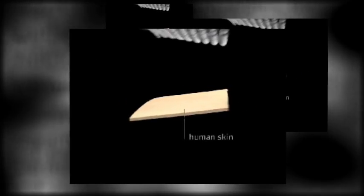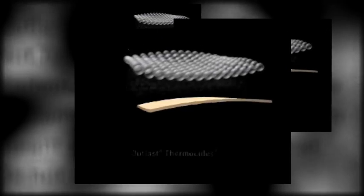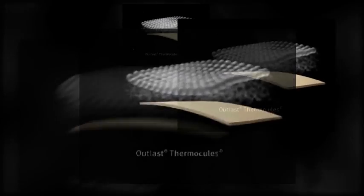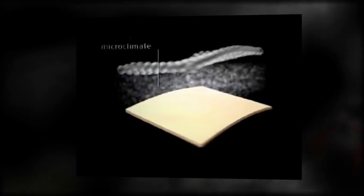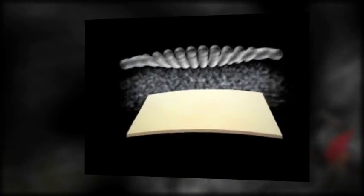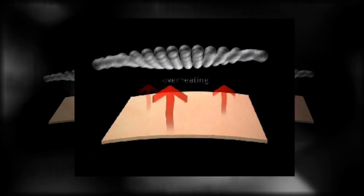Outlast products all contain patented Outlast Thermocules Phase Change Materials. Thermocules adapt to your skin's microclimate to buffer against overheating and sweating and to reduce chill and shivering. The cycle will work continuously.